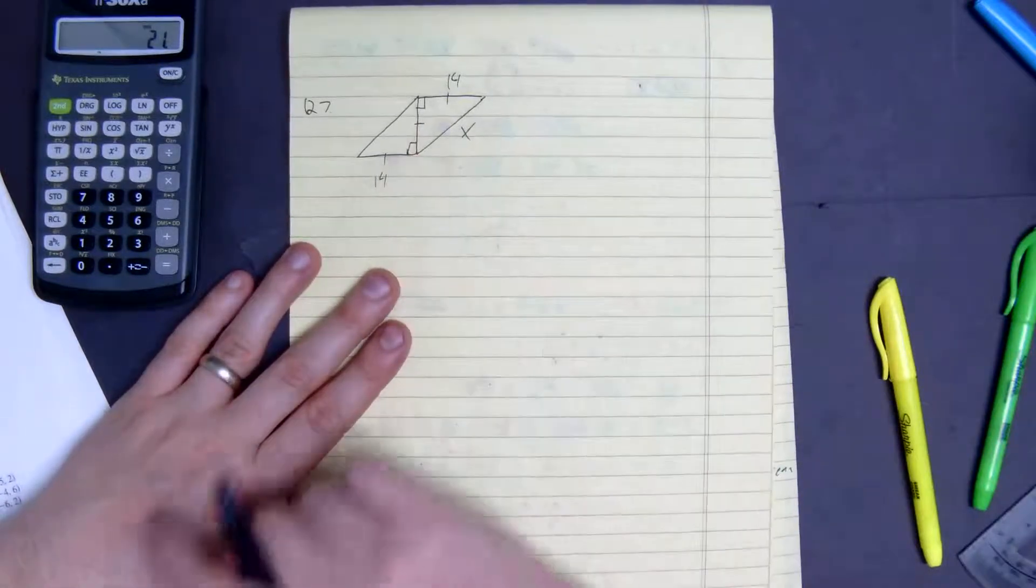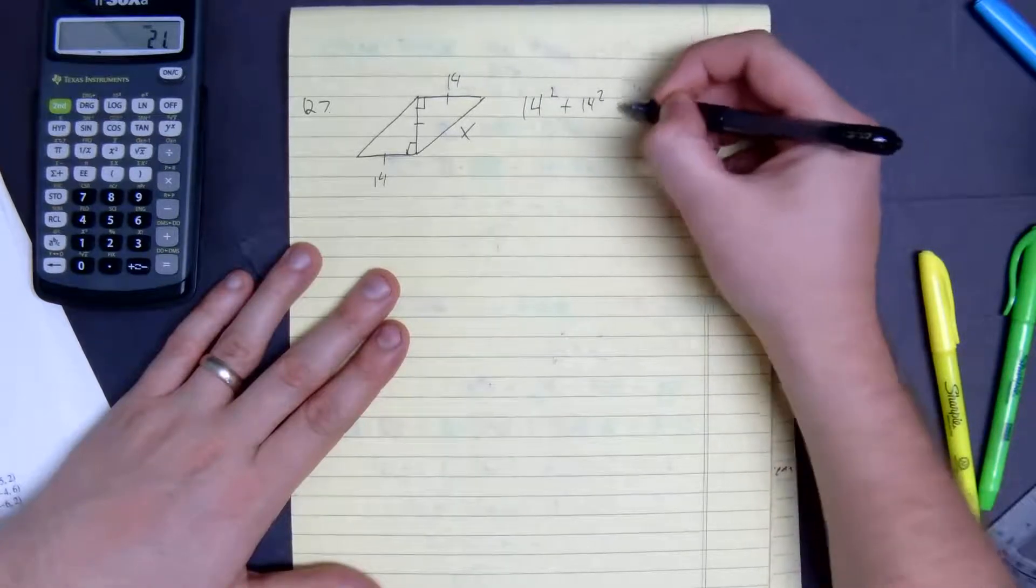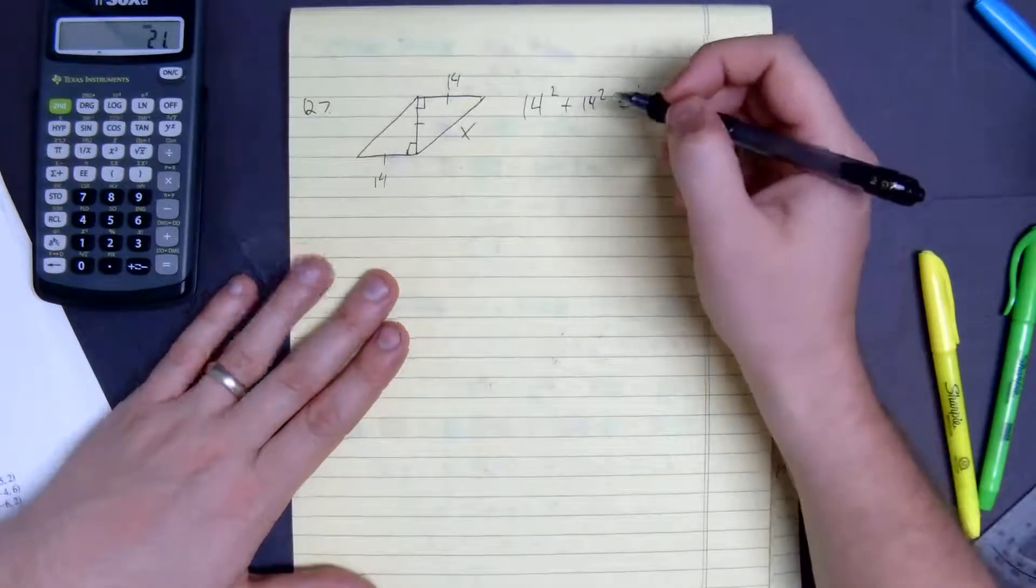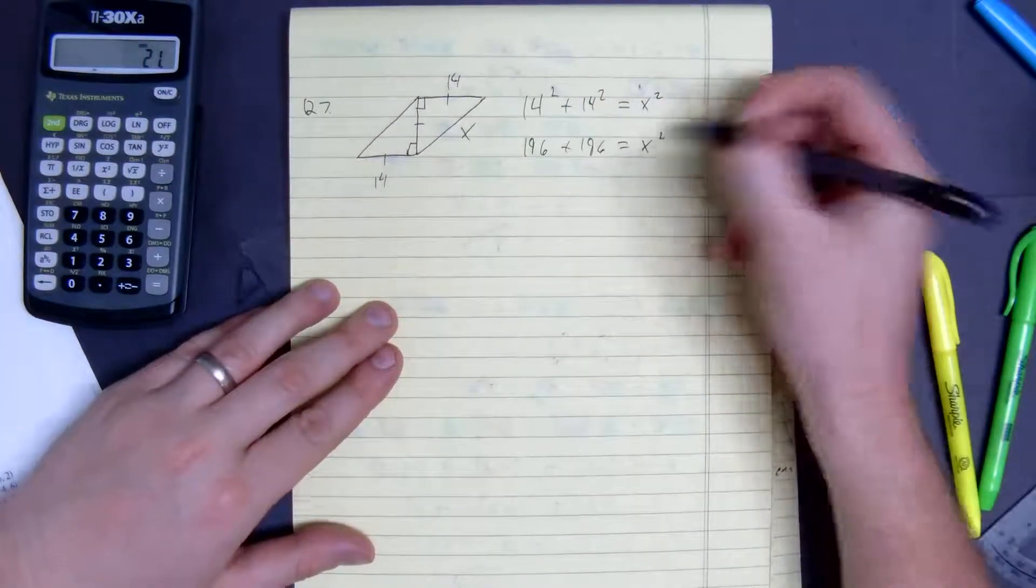So that's 14, this is also 14, so we have 14 squared plus 14 squared equals x squared. 14 times 14, 196, plus 196 equals x squared.